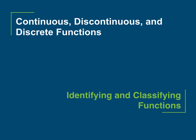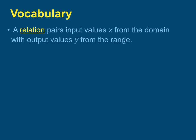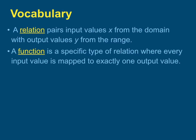Continuous, discontinuous, and discrete functions. A relation pairs input values x from the domain with output values y from the range. A function is a specific type of relation where every input value is mapped to exactly one output value.